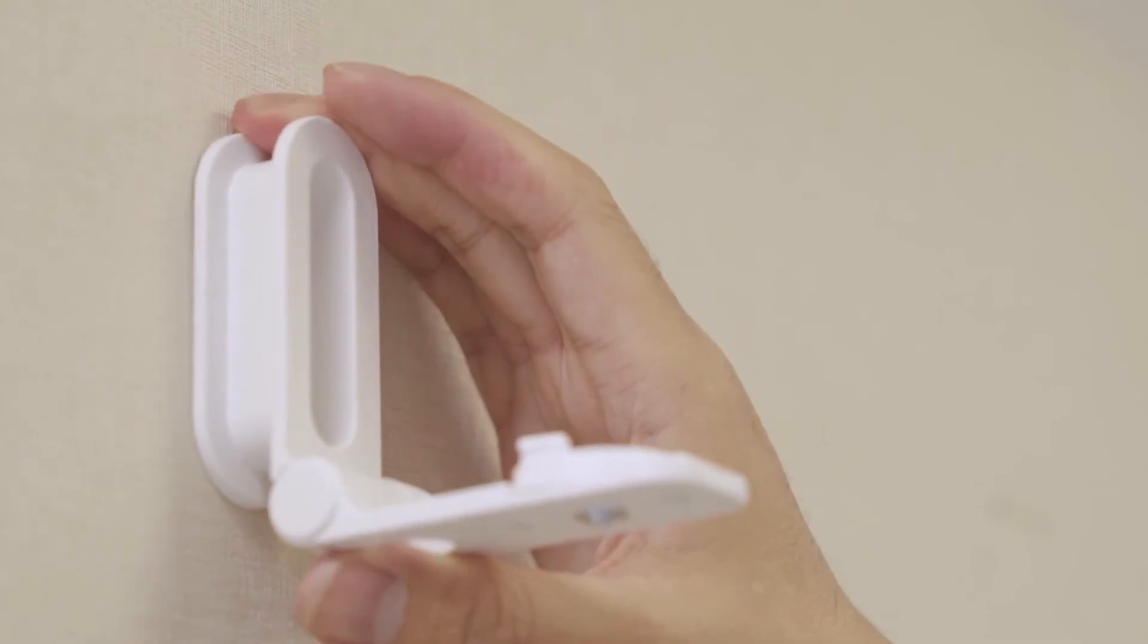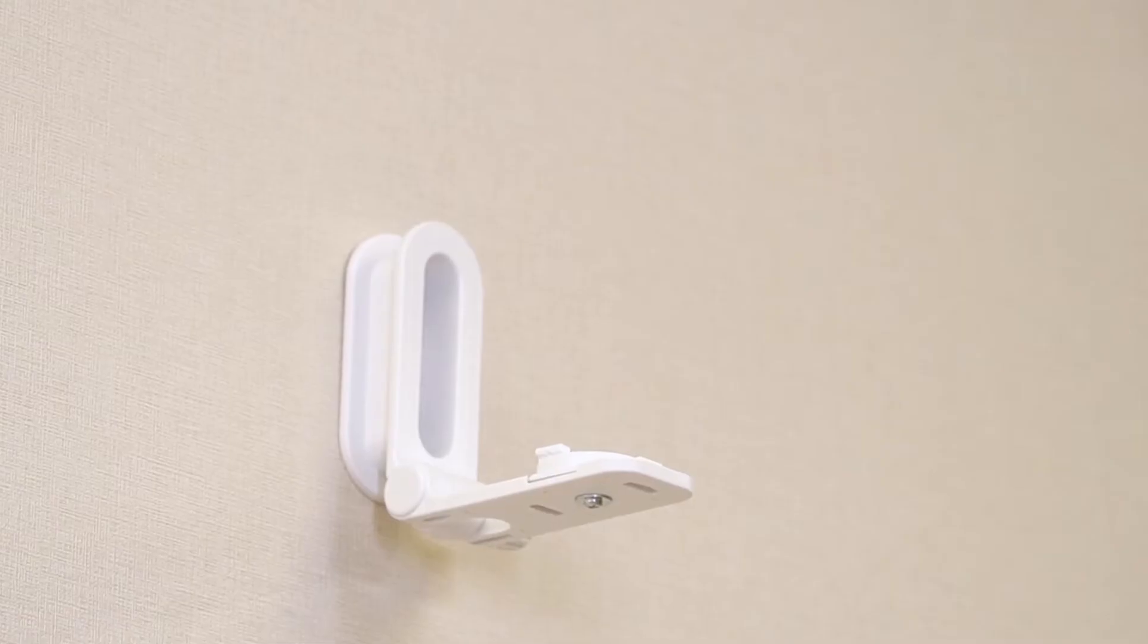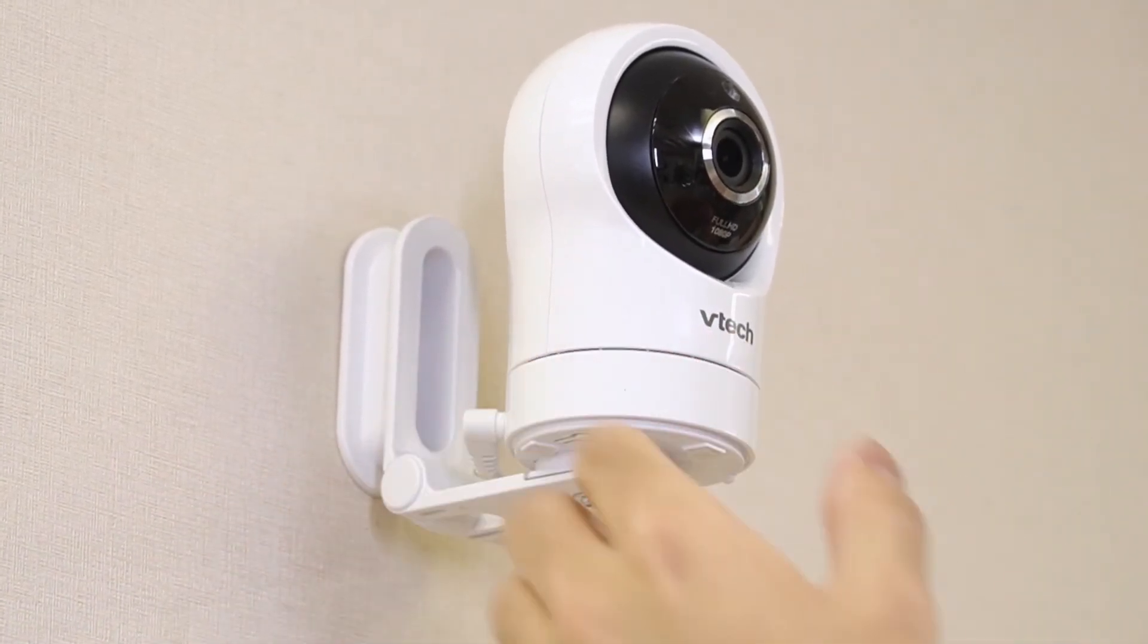Align the holes on the wall mount bracket with the screws on the wall and slide it down. Then, place the baby unit on the wall mount bracket and slide it forward until it locks firmly.